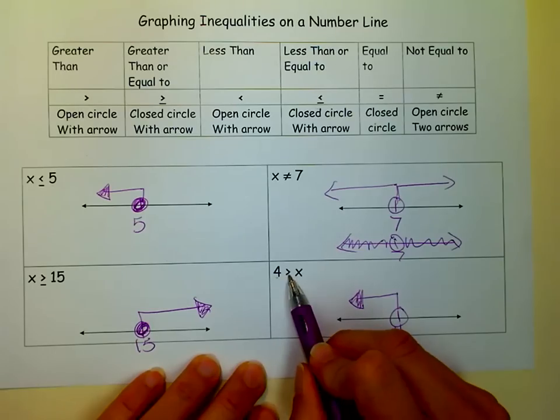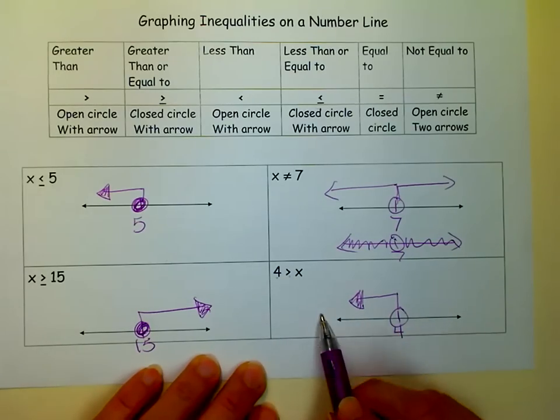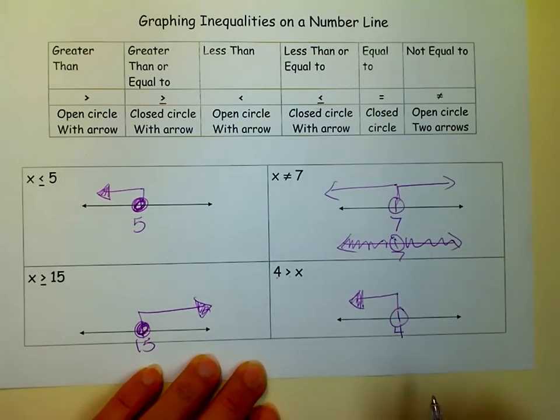And if you read it, it says 4 is greater than X. So that means all my X's are over here, and the 4 is bigger than it. So that kind of makes sense that way, too.